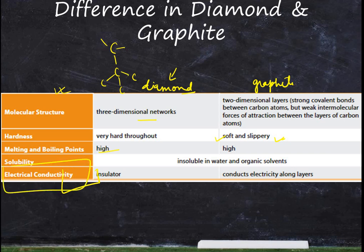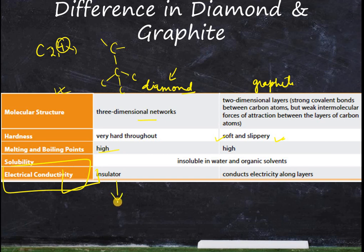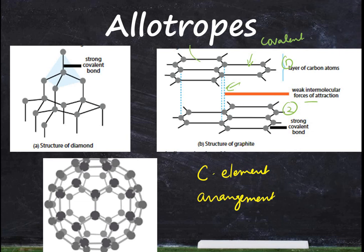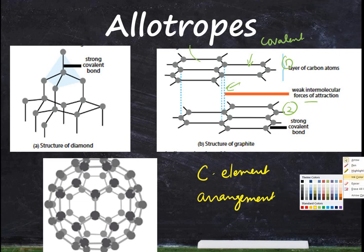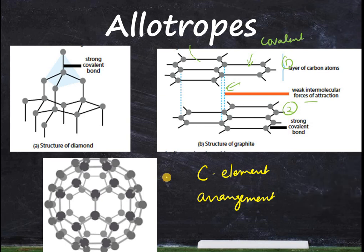Now for electrical conductivity — this is a very important point that makes the two structures very different. Diamond is an insulator. If you look at diamond's structure, none of the electrons are free. Carbon has four covalent bonds, so all four electrons of each carbon atom are shared with the four neighboring carbon atoms, leaving no free electrons.